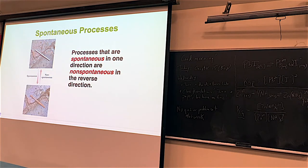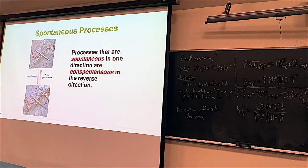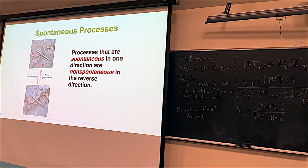Here are some examples of spontaneous reactions. A regular iron nail left out in the rain will eventually get rusty — that reaction, going from iron to iron(III) oxide, is spontaneous. On the other hand, a rusty nail turning back into a regular nail would be non-spontaneous; it would take energy. Generally, reactions are spontaneous in one direction and non-spontaneous in the other.